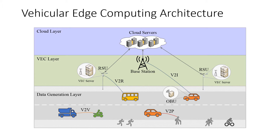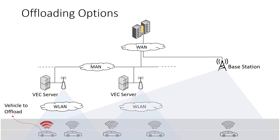In an intelligent transportation system, there are many acronyms. I want to summarize them quickly. OBU is the on-board processing unit of the vehicles. RSU stands for the roadside unit that includes vehicular edge servers. V2V stands for vehicle-to-vehicle transmission. V2P is the vehicle-to-pedestrian transmission. V2R stands for vehicle-to-RSU transmission. And finally, V2I is the vehicle-to-infrastructure transmission. On-board processing unit, vehicle-to-vehicle communication, and vehicle-to-pedestrian communication are not in the scope of our work.